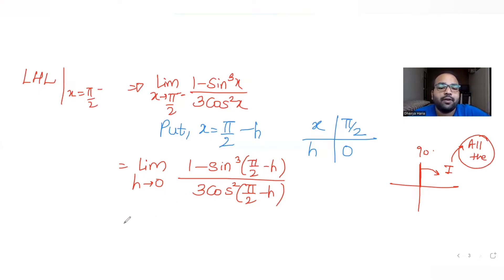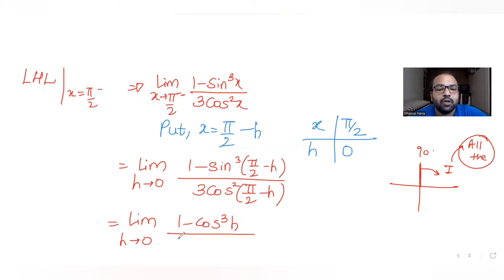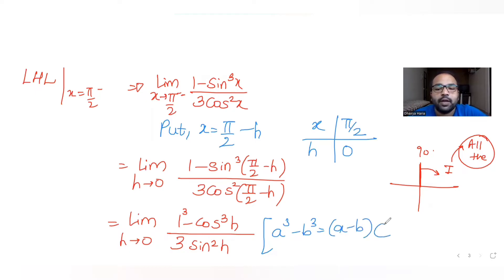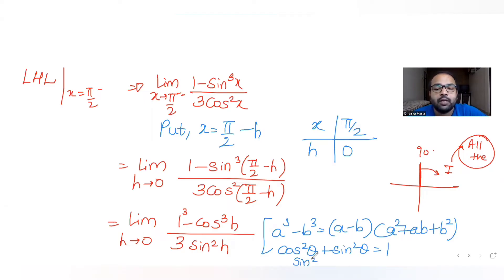So the expression becomes limit h → 0 of (1 - cos³h) / (3sin²h). I write the numerator as 1³ - cos³h using the a³ - b³ expansion: (a - b)(a² + ab + b²). For the denominator, I use the identity cos²θ + sin²θ = 1, so sin²θ = 1 - cos²θ.